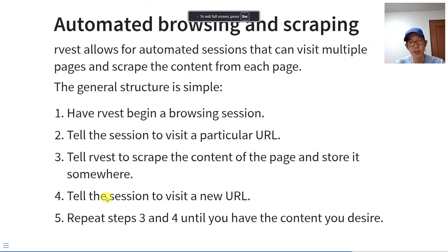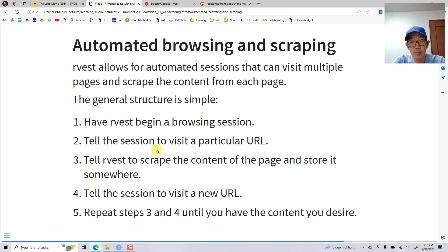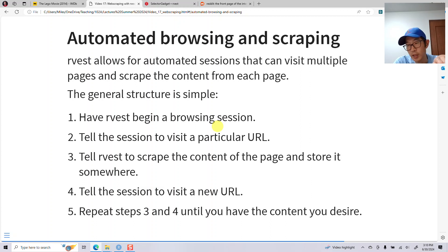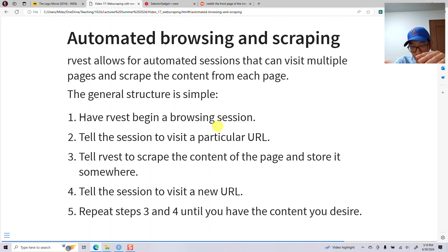rvest also supports automated browsing and scraping. You begin a browsing session, tell it to visit a particular URL, tell rvest to scrape the content of that page, and store it somewhere. Once you get that content, you tell it to go to a new URL, scrape that content, go to another URL, scrape that content, and so on. You just repeat this until you get all the content you want.